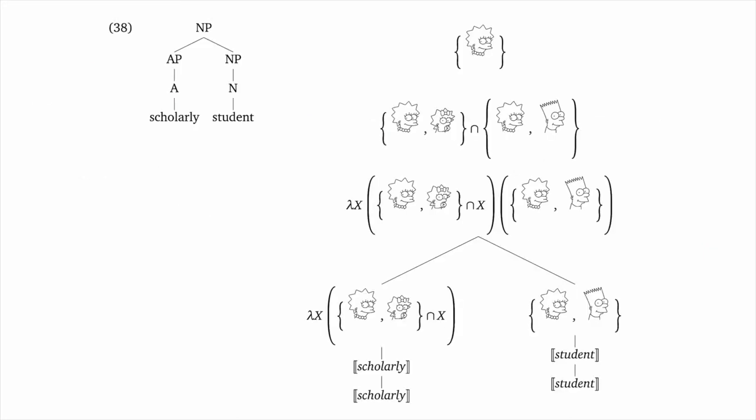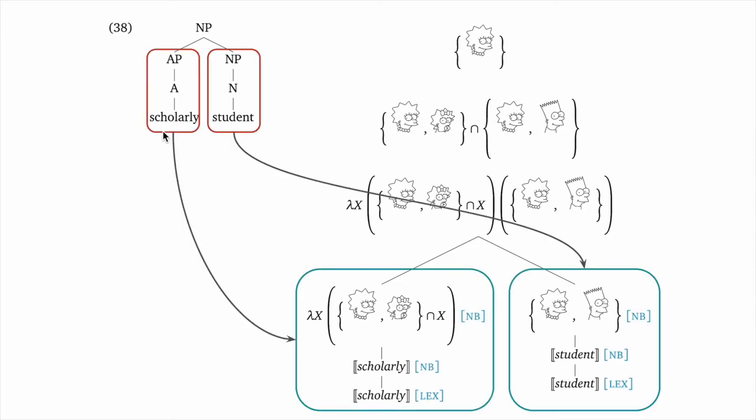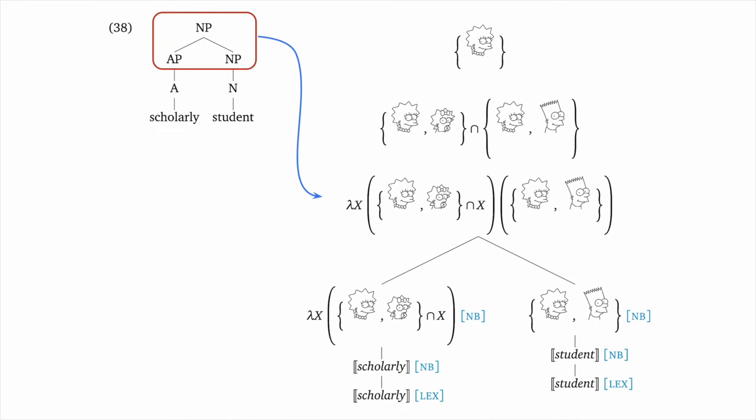Let's do scholarly student now. We use rule lex and NB to build all the way up to the smaller tree with NP at its root and children AP and NP. This triggers the use of rule A and that involves applying the meaning of the AP to the meaning of the NP. And then we can do the lambda conversion and some other simplifications as I've done continuing to work upwards. And we get the set containing just Lisa as the meaning for scholarly child.